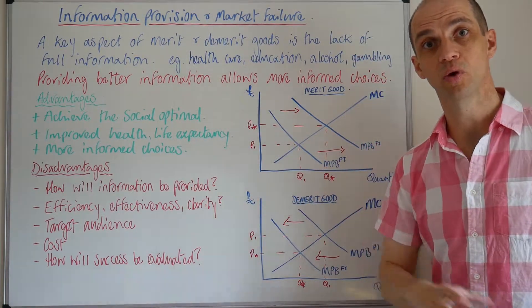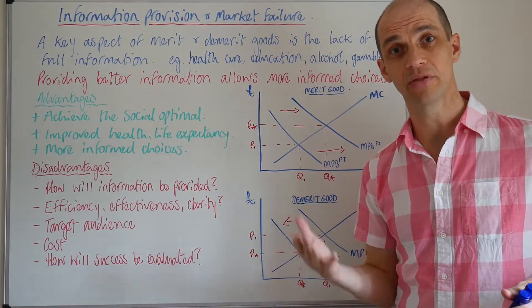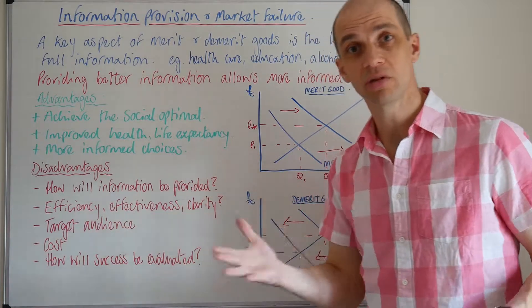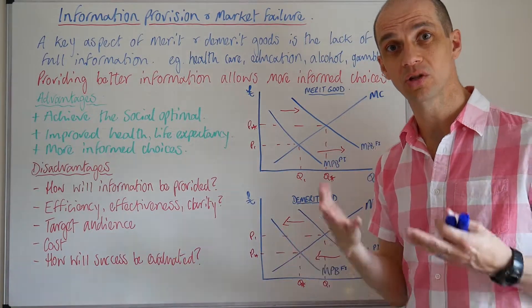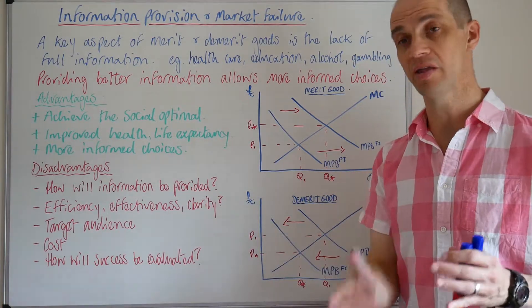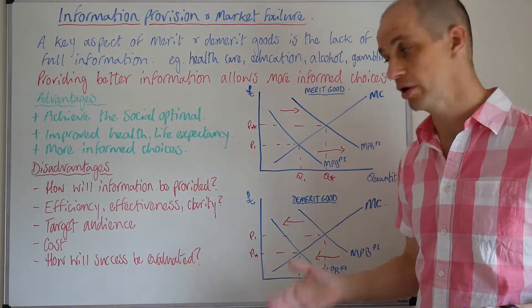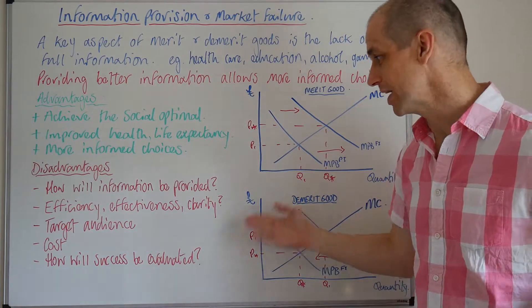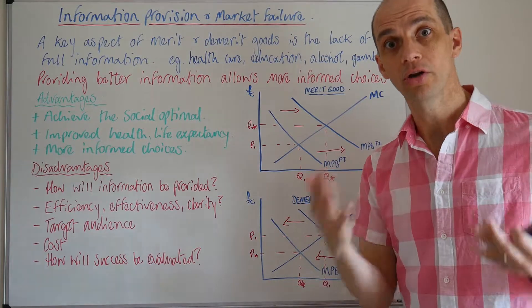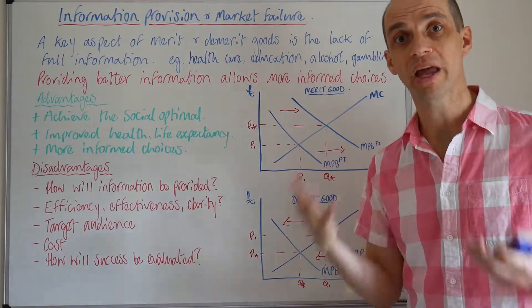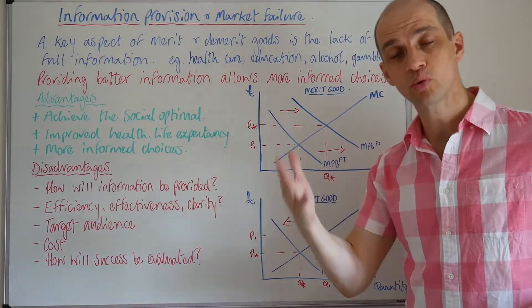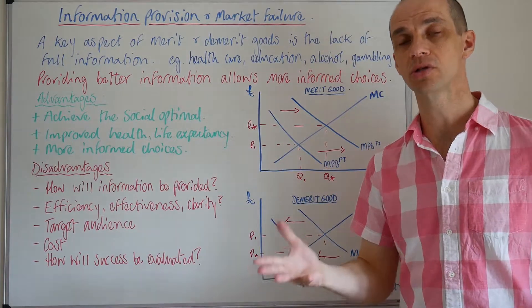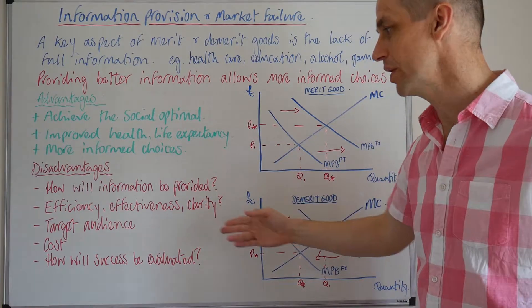There are a number of disadvantages to such an approach. You've got to consider how the information will be provided and what will be most effective in terms of the way it is delivered. There's also the efficiency argument around how well you can actually target the consumers you want to reach — how well can you target the demographic that is over-consuming this good? If the good has very addictive qualities, how effective is the campaign going to be? Less so, you would think. What about the clarity of the message — will it be understood? There are various issues regarding the way the campaign is actually conducted.